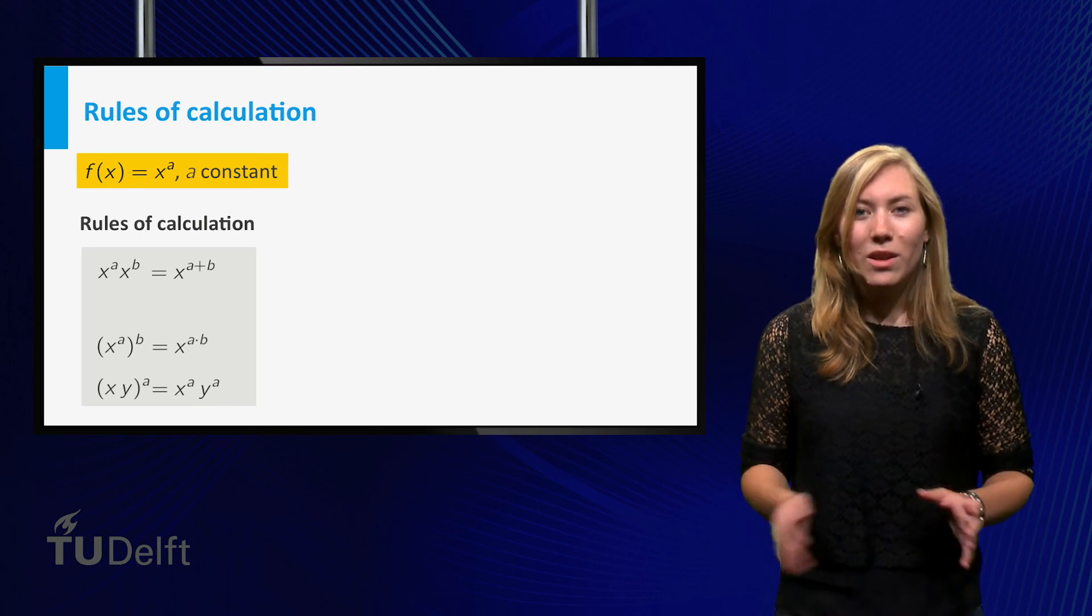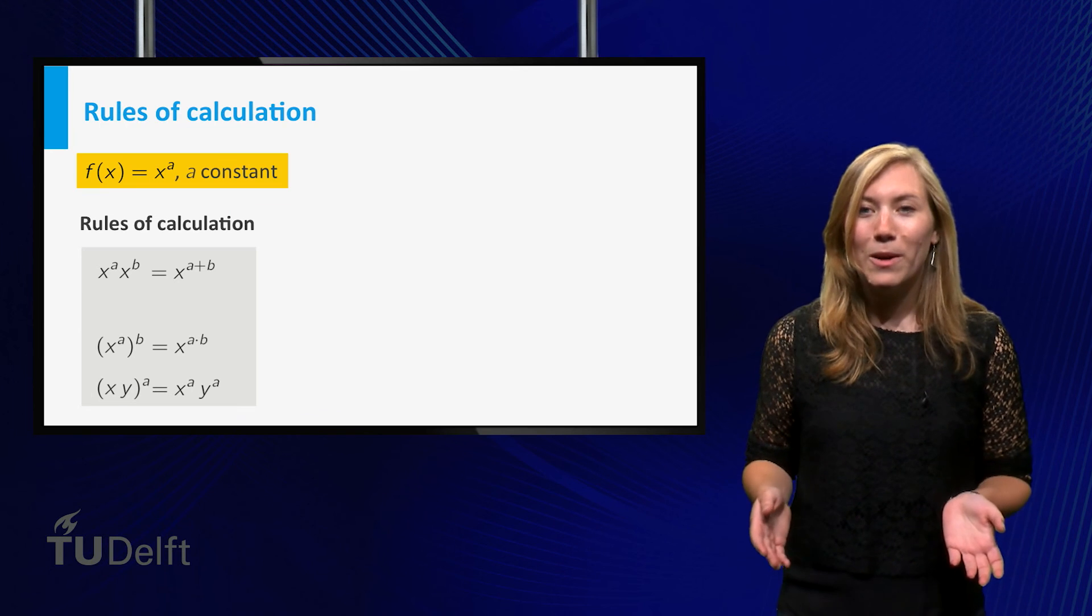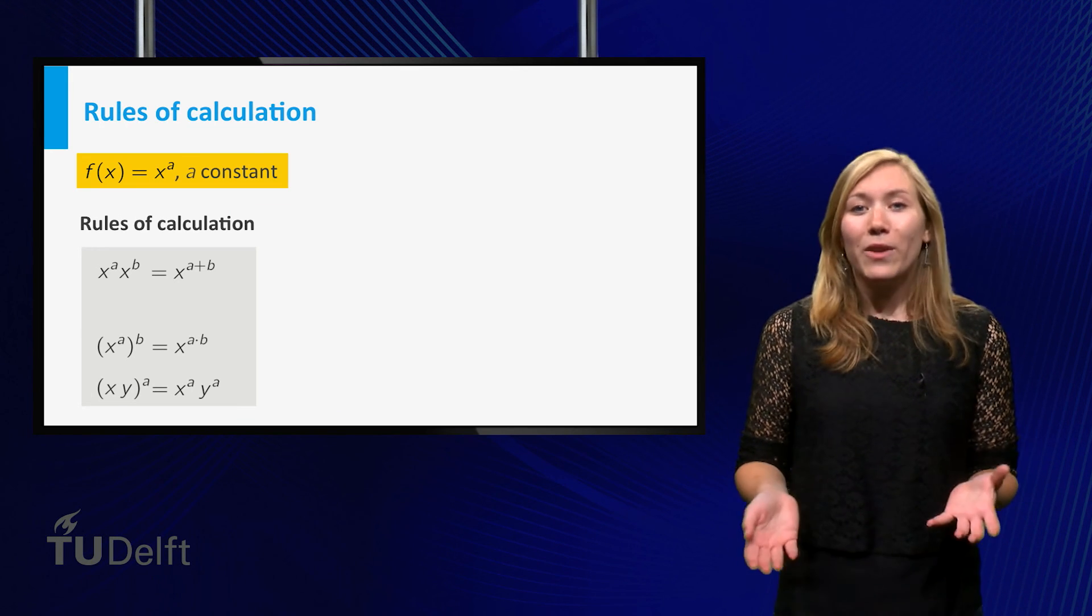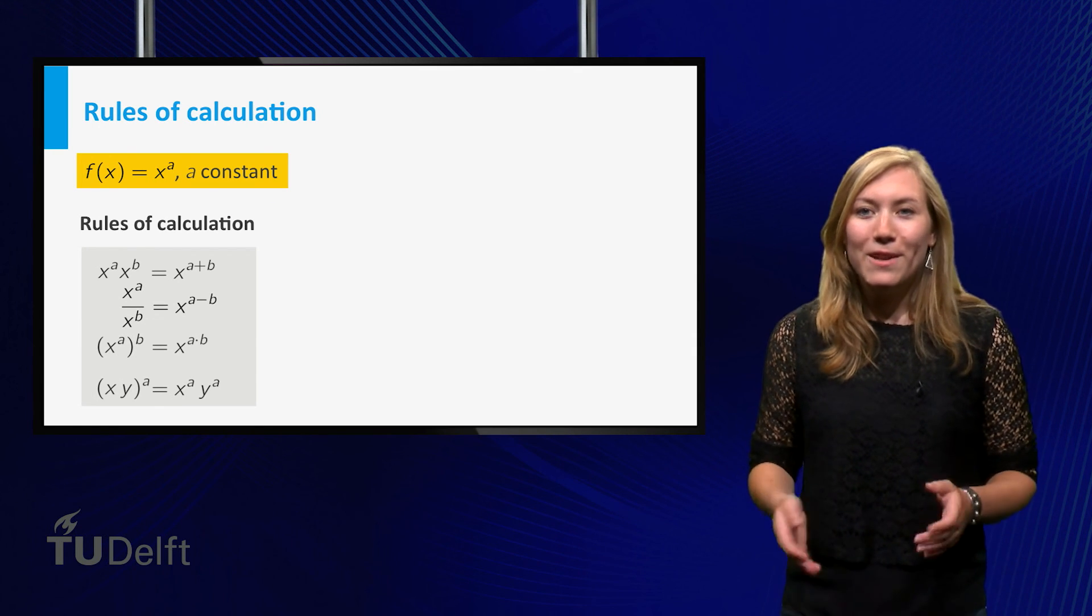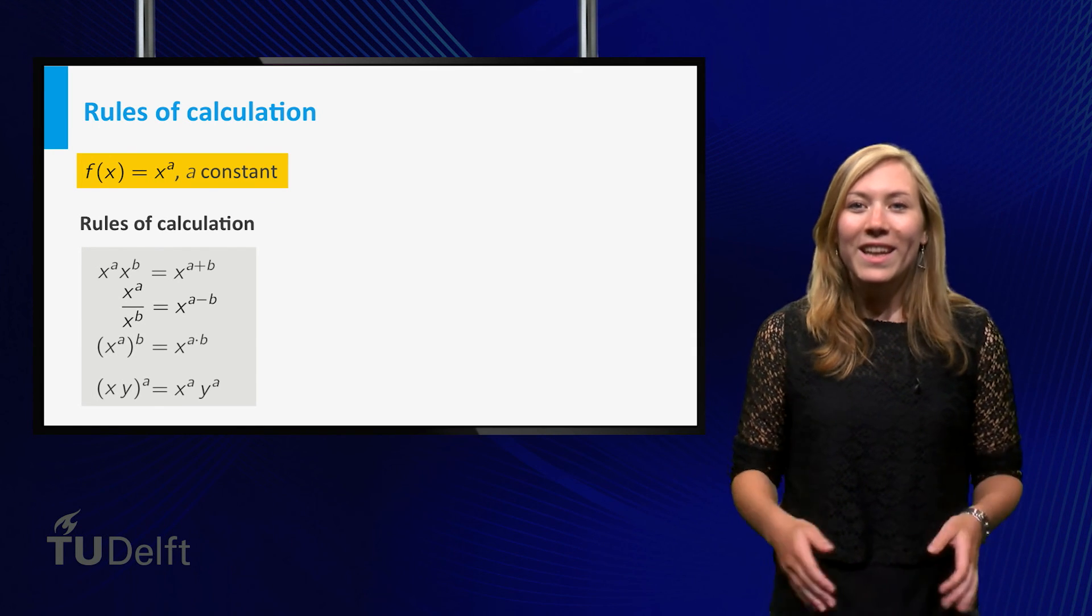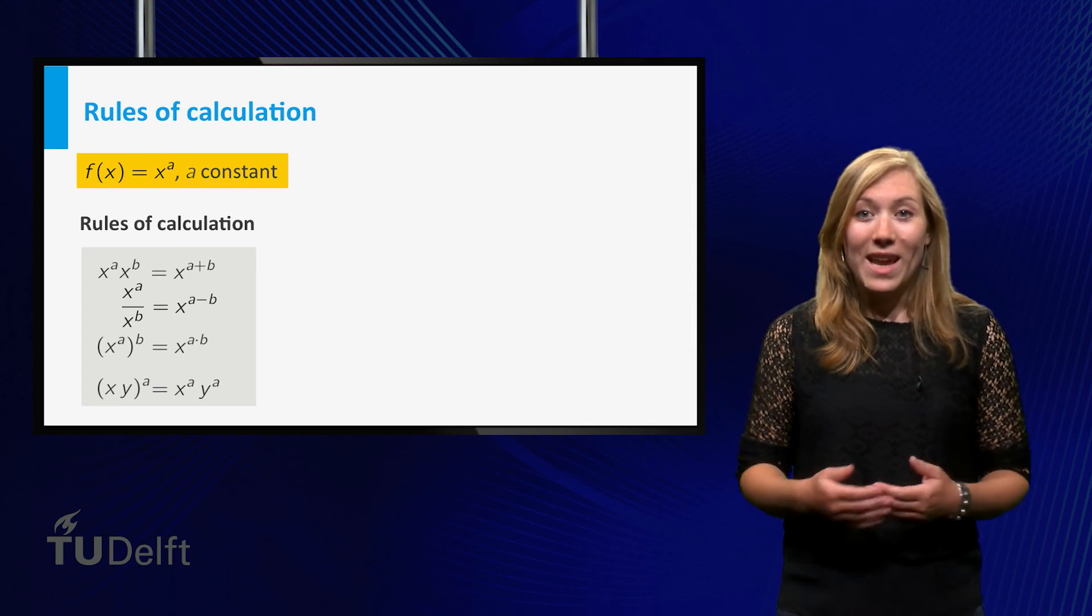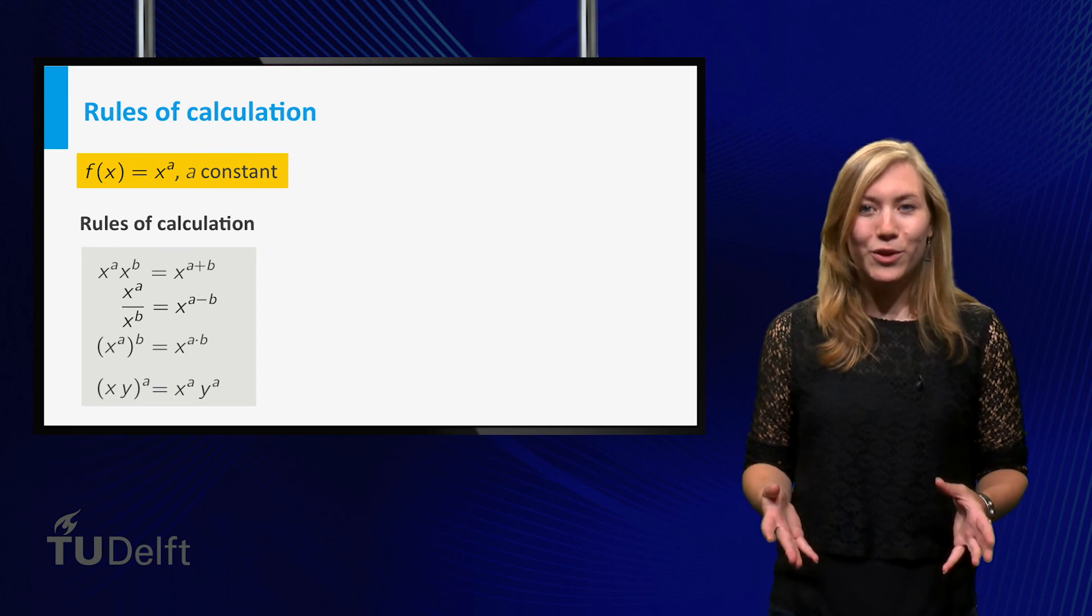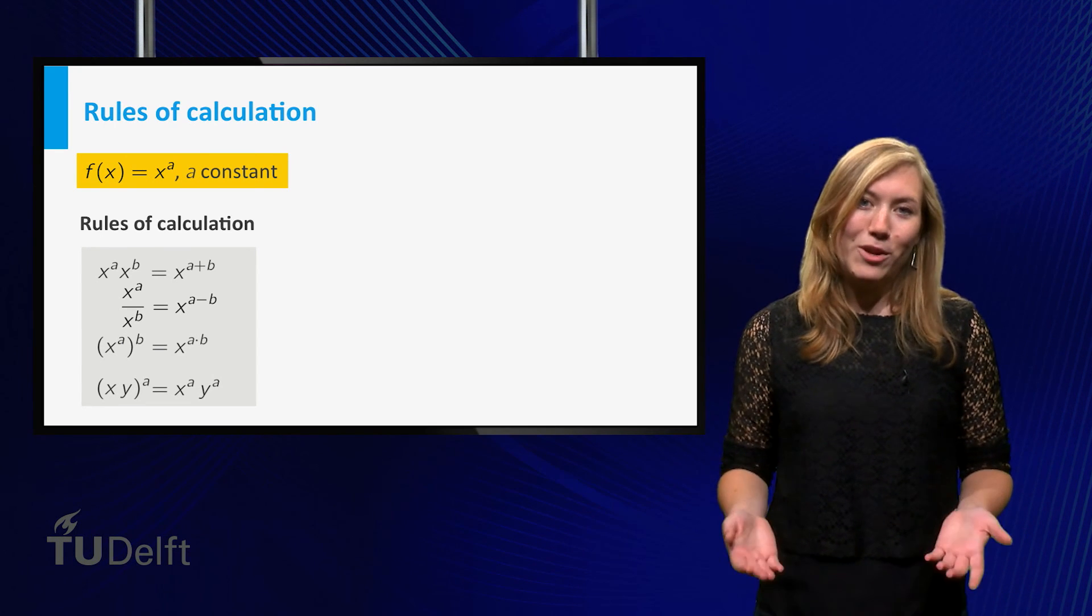The rules of calculation completely extend to the negative powers as well, as long as x is non-zero. In fact, we can add a rule. x to the power a divided by x to the power b equals x to the power a minus b. This is just the consequence of the first rule, and the definition of negative powers.